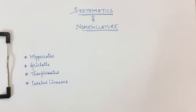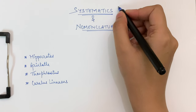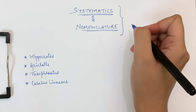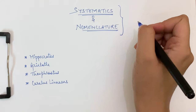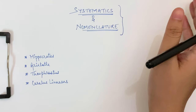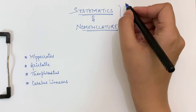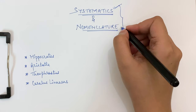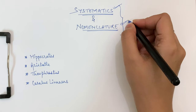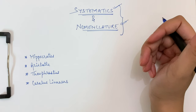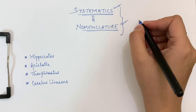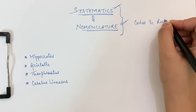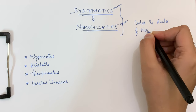Hello everyone. Today we are going to study systematics and nomenclature. In order to study it in an easy manner, we are going to divide it into three parts. First we'll study systematics and its definition. Then we'll move towards nomenclature and the importance of naming different organisms, and at the end we'll also study the codes and rules of nomenclature.